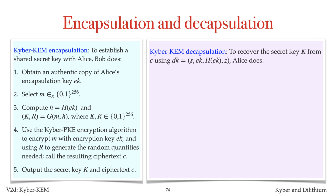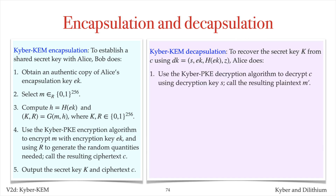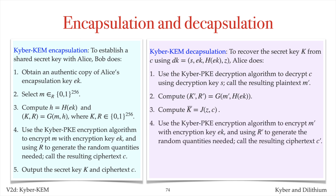To recover the secret key k from ciphertext c, Alice uses her decapsulation key as follows. She uses the Kyber PKE decryption algorithm and her decryption key s to decrypt c, obtaining plaintext m-prime. She then hashes m-prime and the hash of ek to obtain 256-bit strings k-prime and r-prime. She hashes her secret z and ciphertext c to obtain k-bar. Next, she uses the Kyber PKE encryption algorithm to encrypt m-prime using r-prime, obtaining ciphertext c-prime. If c does not equal c-prime, she returns k-bar; otherwise, she outputs k-prime as the secret key.